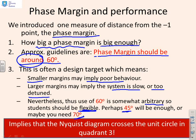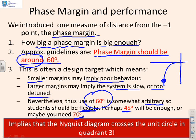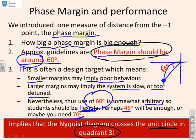So 60 degrees is an indicator. Just a note to finish: in order to get a phase margin of around 60 degrees, if I sketch the Nyquist diagram, this implies the diagram crosses the unit circle at 60 degrees from the minus 1 point, which means the Nyquist diagram has to cross the unit circle in quadrant 3. That's quite important because visually it tells you where you expect the Nyquist diagram to be. If your Nyquist diagram is not crossing the unit circle in quadrant 3, it's unlikely you've got an appropriate phase margin.